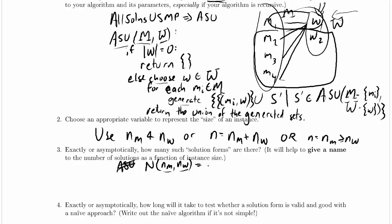So that is equal to, let's start with our base case. If the size of w is 0, then the number of solutions is, well, we just returned the empty set.